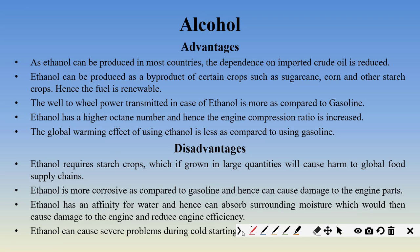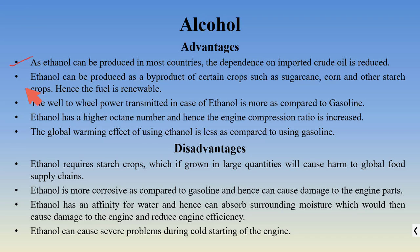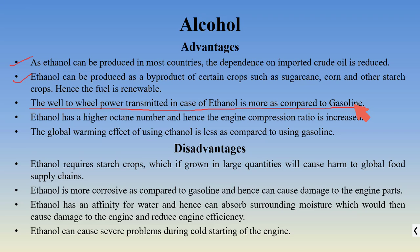The advantages of using ethanol: it can be produced within the country itself, reducing the amount of imported crude oil. Ethanol is produced as a by-product of certain crops such as sugarcane — when sugar is produced from sugarcane, ethanol can also be produced in the same industry. The brake thermal efficiency of ethanol is greater than that of gasoline. Ethanol has a higher octane number, so the compression ratio can be increased, and with increased compression ratio there is increased engine efficiency.